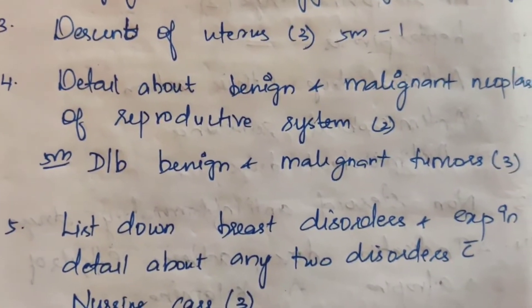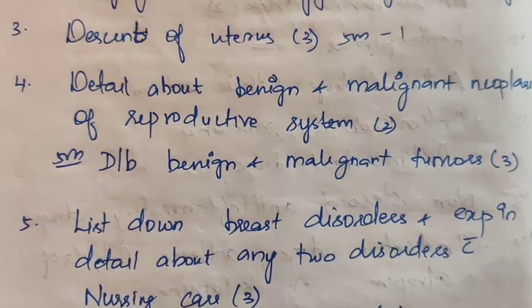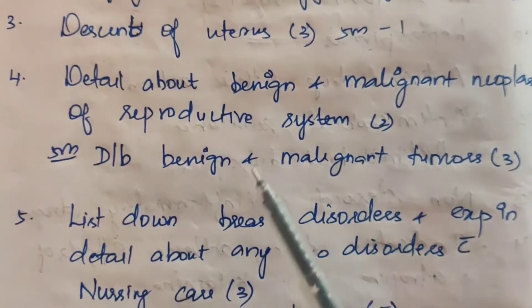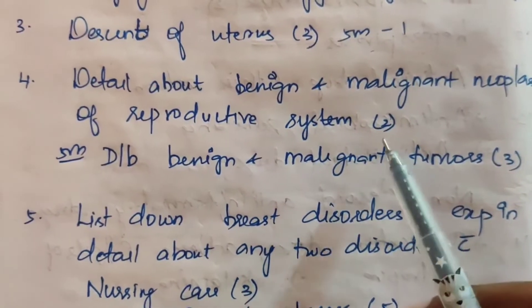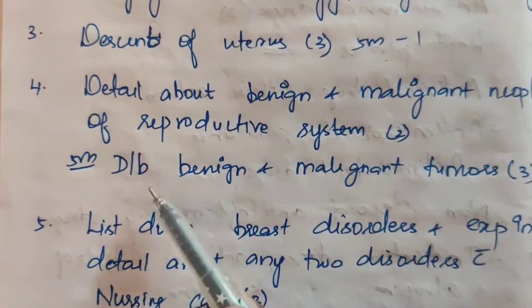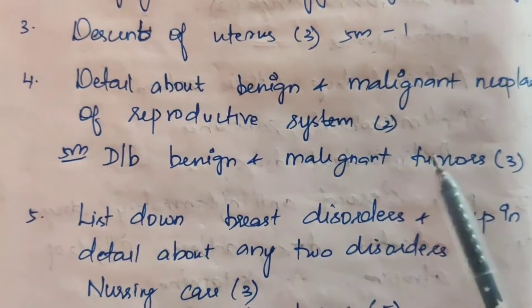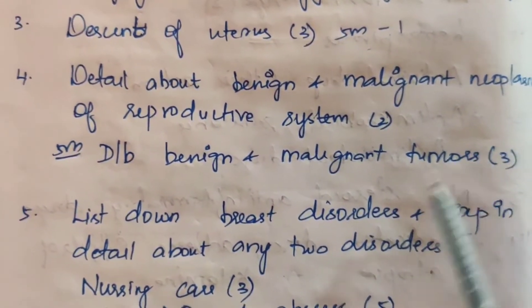Fourth one: details about benign and malignant neoplasms of the reproductive system — two times. And for 5 marks: differentiate between benign and malignant tumors — three times.